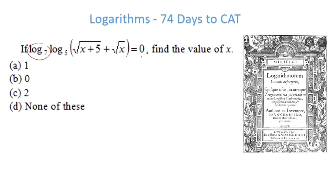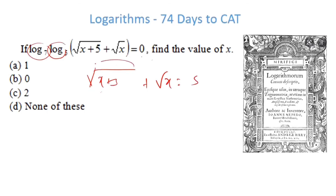For the final problem, similar to the last: log base 7 gives 7^0 = 1, and the second equation gives 5^1 = 5. So √(x+5) + √x = 5. Applying a Pythagorean-style approach: trying x = 4 gives √9 + √4 = 3 + 2 = 5. So x = 4, and the answer is 'none of these.' I hope you enjoyed and learned — thank you for joining, god bless, take care.